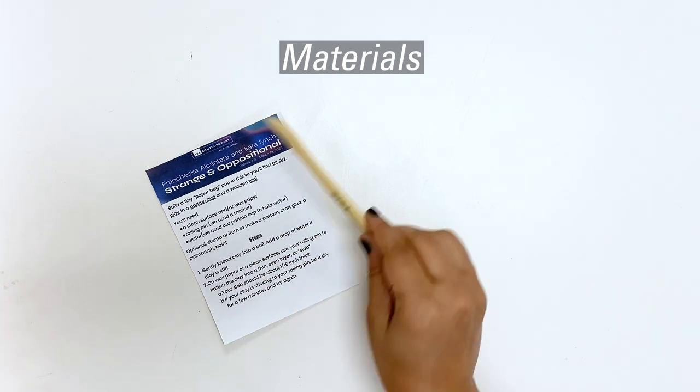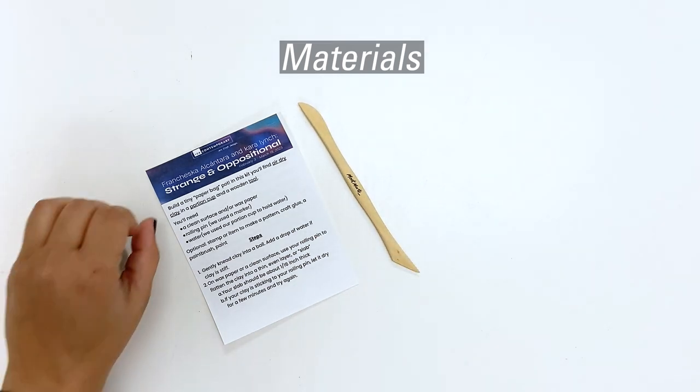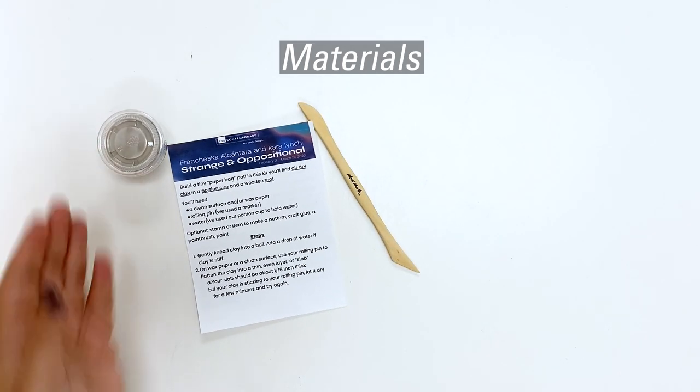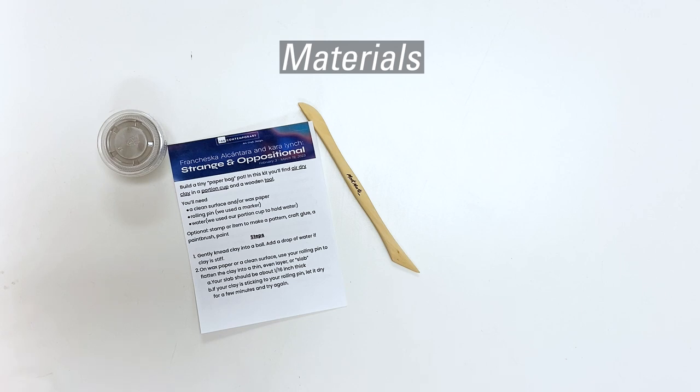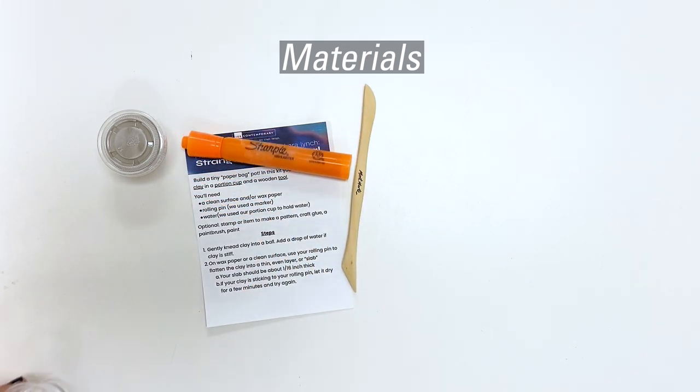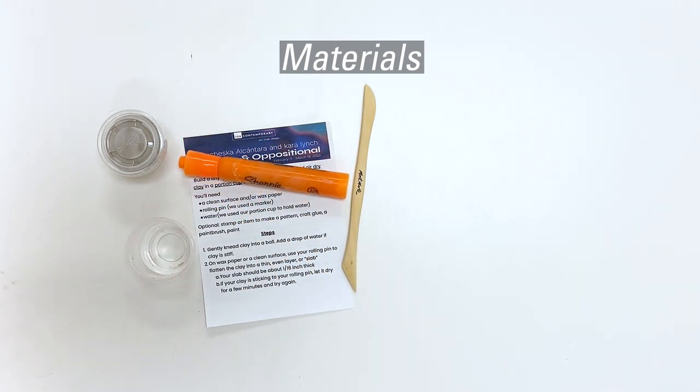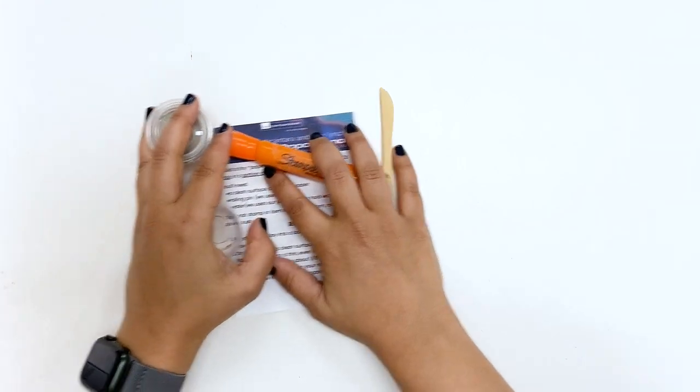In your kit, you'll find instructions, a clay tool (yours may look different from this), your ounce of clay, and you'll also need something to use as a rolling pin (we used a highlighter), and some water, which we put in our empty portion cup.